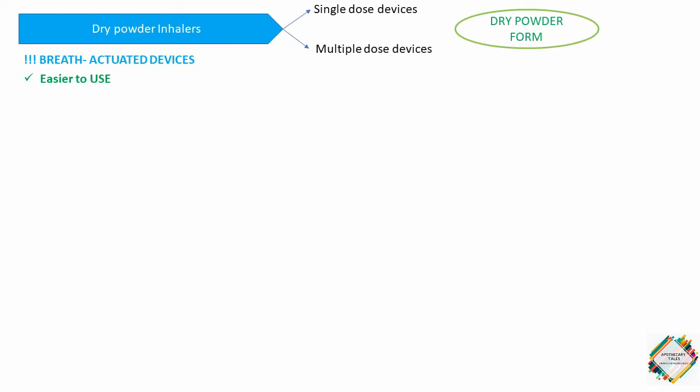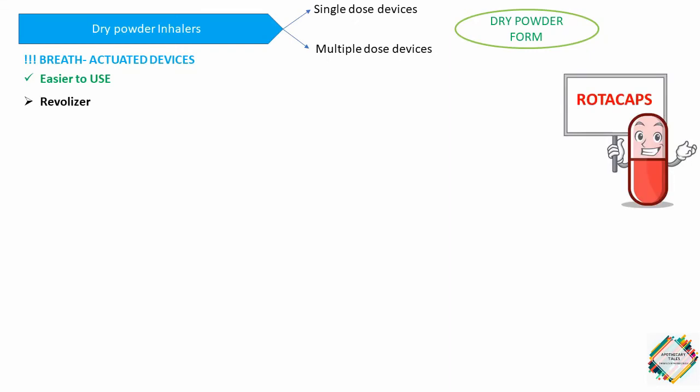The first DPI we'll discuss is the Revolizer, an easy-to-use DPI used with medication capsules known as Rotacaps. It provides an accurate medication dose and more efficient dispersal even when inhalation flow rates are low.